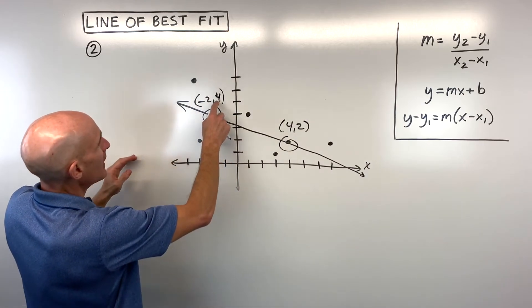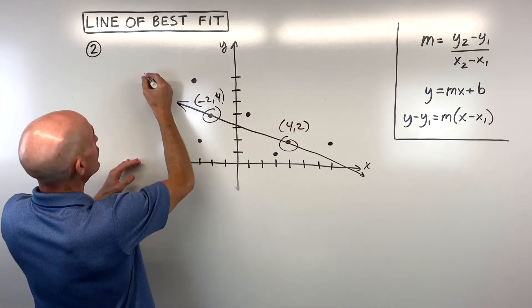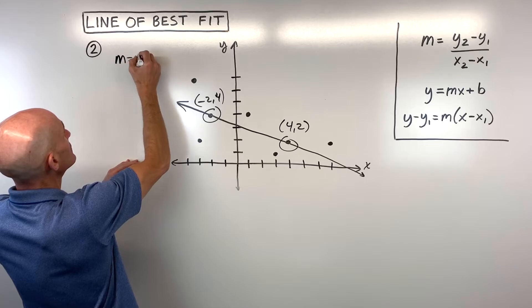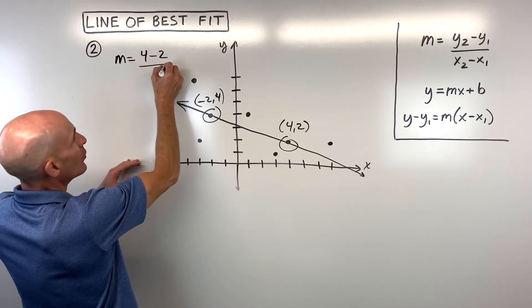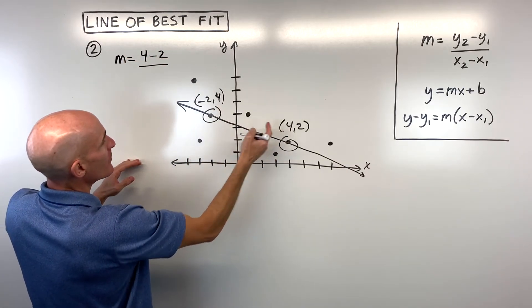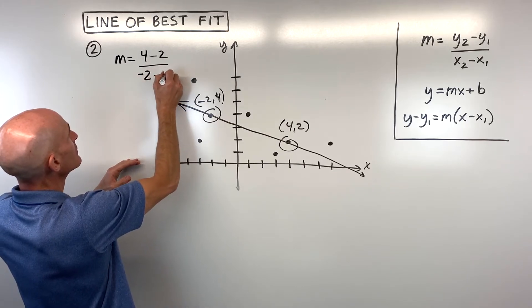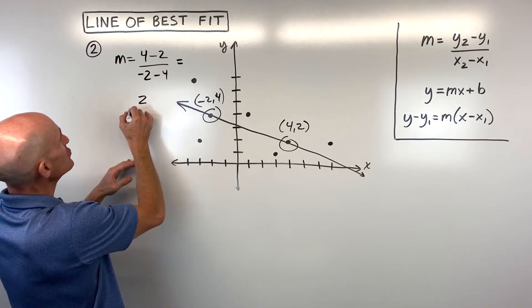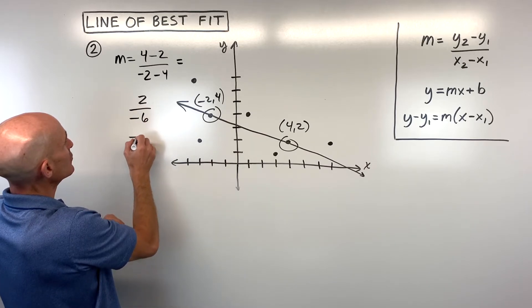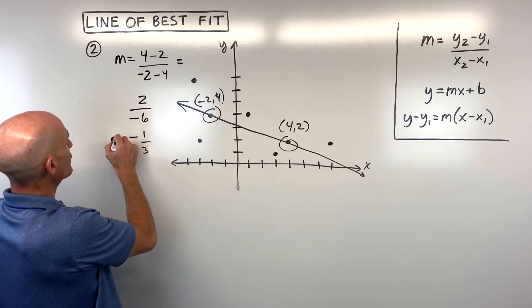I would start by finding the slope using our slope formula. So I would say y minus y, so 4 minus 2, over negative 2 minus 4. And that comes out to 2 over negative 6, which is negative 1/3.